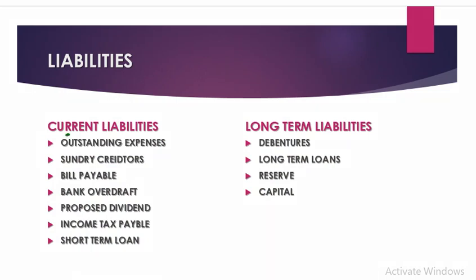Current liabilities are those to be paid within less than one year, including outstanding expenses, sundry creditors, bills payable, bank overdraft (if temporary), proposed dividend, income tax payable, and short-term loans. Long-term liabilities are those to be paid after one year, including debentures, long-term loans, reserves, and capital.